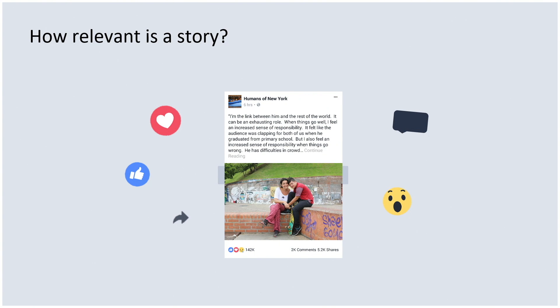For example, a user can take actions like like, share, love, and comment on the story. Those are really strong signals indicating people want to see the content and enjoy the content. While other actions people can take on the story — like hiding the story — are a really strong negative signal indicating that people don't want to see the content.